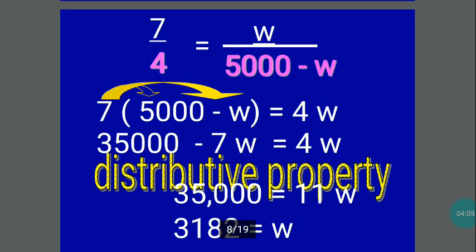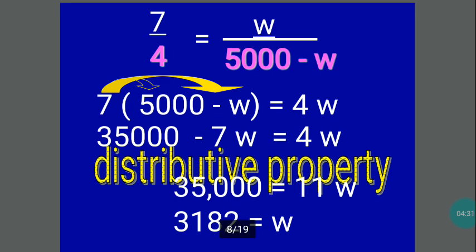Let's proceed to another example: 7 over 4 is equal to w over 5000 minus w. The same procedure — all you have to do is cross multiply. You have 7 times the quantity of 5000 minus w, which is equal to 4w. By the distributive property, you have 7 times 5000, which is 35,000, then 7 times negative w, which is negative 7w, equal to 4w.